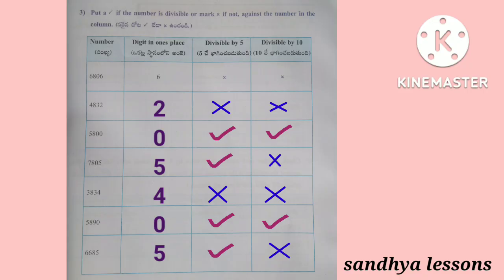4,832 is not divisible by 5 and also not divisible by 10. 5,800 is divisible by both 5 and 10. 7,805 is divisible by 5 but not divisible by 10. 3,834 is not divisible by 5 and 10. 5,890 is divisible by both 5 and 10. 6,685 is divisible by 5 but not divisible by 10.